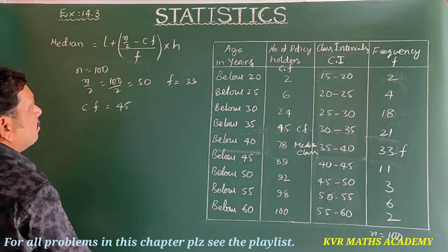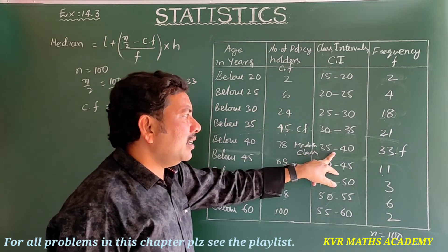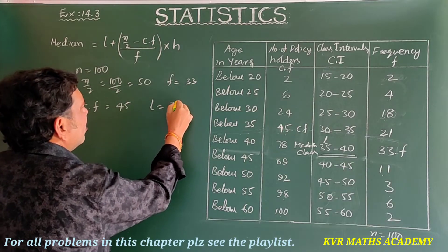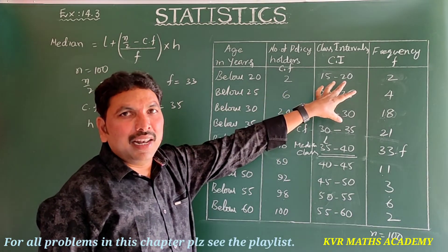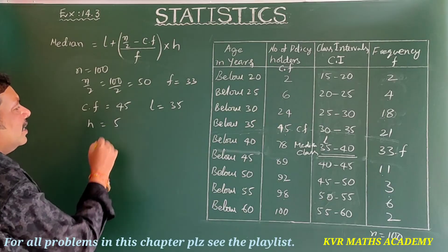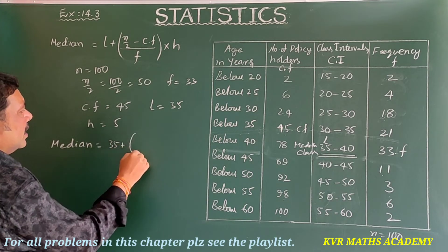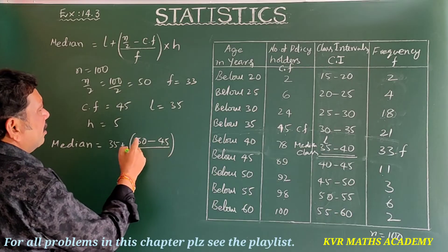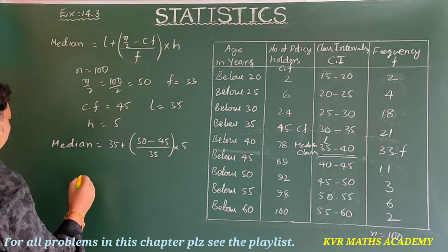The lower boundary of the median class L = 35, and class width h = 5. Substituting into the median formula: Median = 35 + [(50 − 45) / 33] × 5.